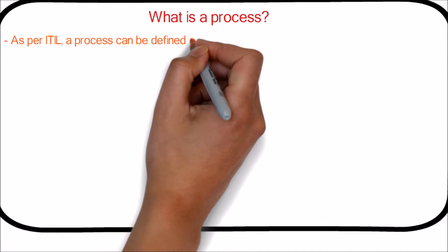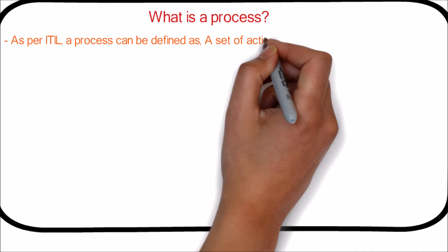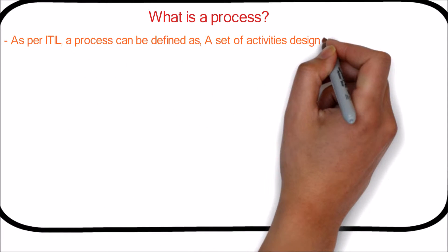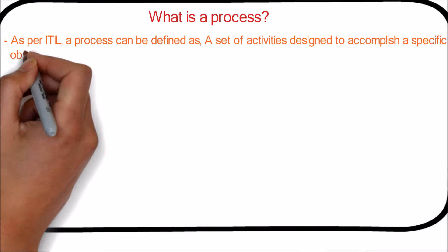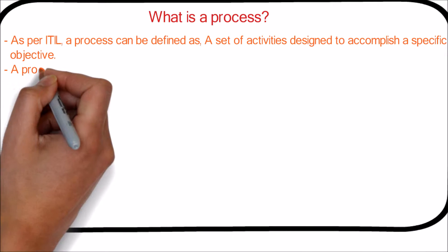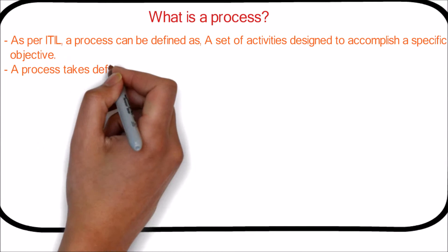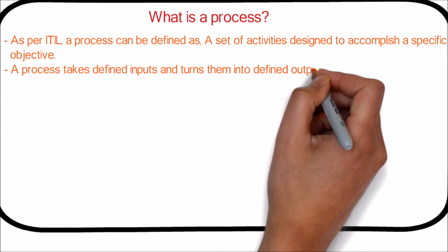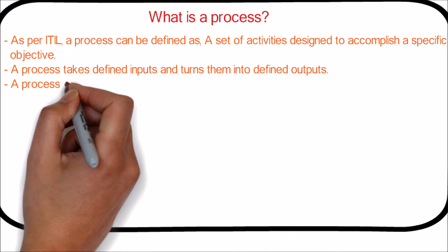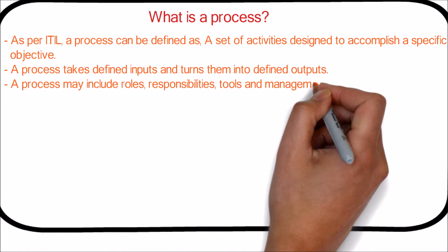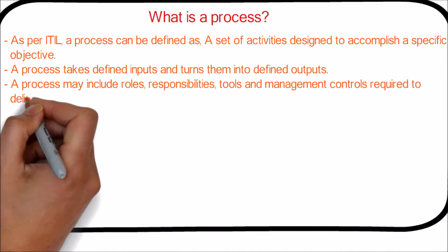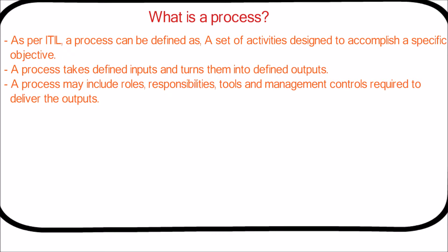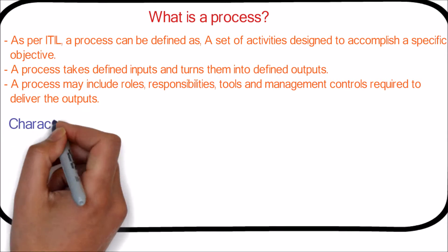As per ITIL, a process can be defined as a set of activities designed to accomplish a specific objective. A process takes defined inputs and turns them into defined outputs. A process may include roles, responsibilities, tools, and management controls required to deliver the outputs.